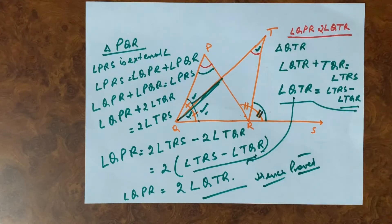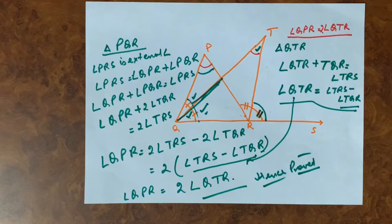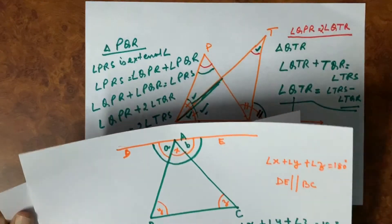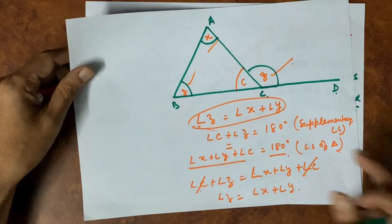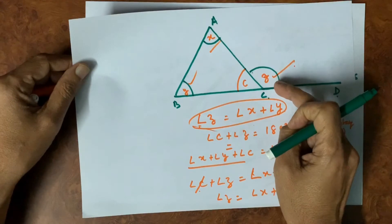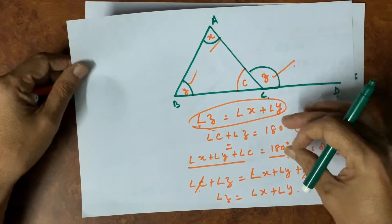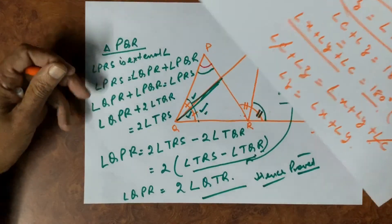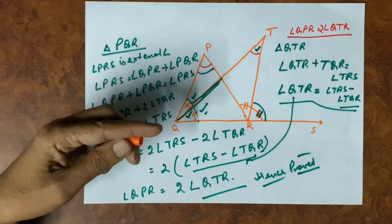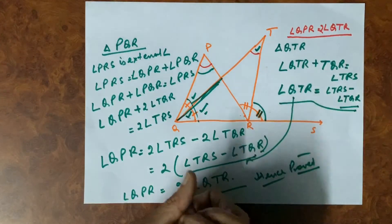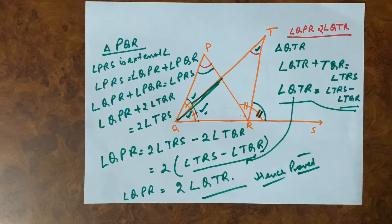So, we have seen these two axioms: the sum of angles of a triangle equals 180 degrees, which we proved, and the exterior angle of a triangle equals the opposite two internal angles, which we also proved. Based on these two axioms we solved some problems. In our next video we will take more complicated problems and learn more about angles of triangles and their properties. Thank you.